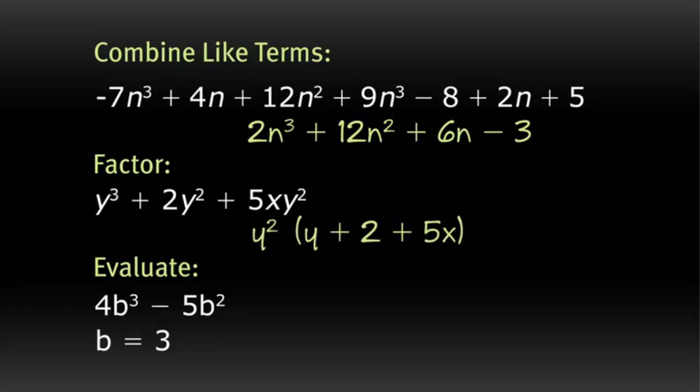And finally, in evaluating this expression, you want to plug b equals 3 into the expression and multiply out. So we get 4 times 3 cubed minus 5 times 3 squared. 3 cubed is 27, and 3 squared is 9. 4 times 27 is 108, minus 45 gives us 63. Excellent.